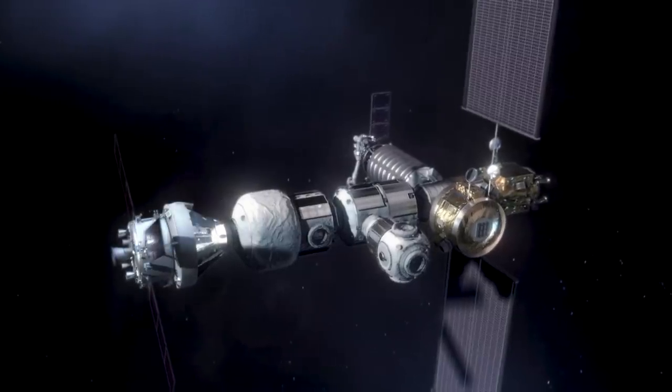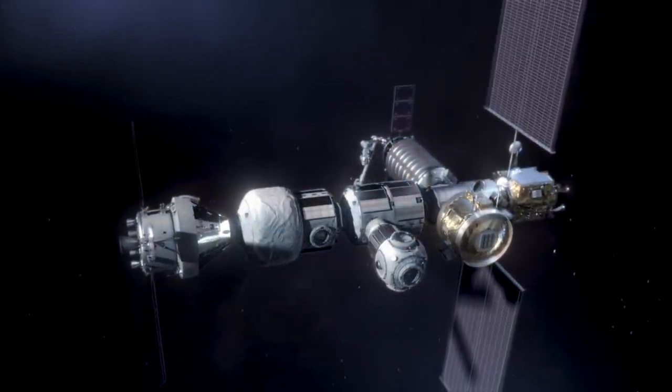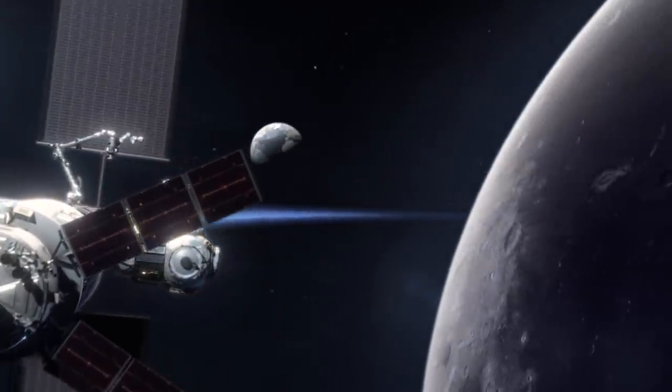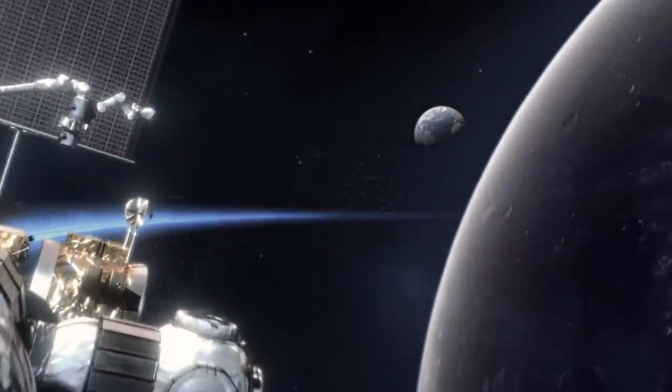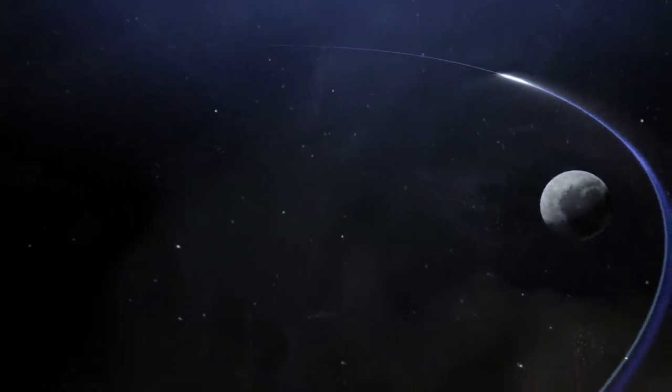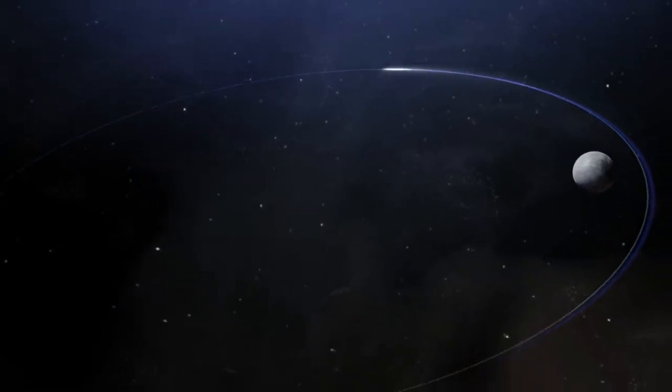This orbit will be home for NASA's Gateway, the future space outpost that will support visiting astronauts on their way to the Moon and beyond. To help prepare for Gateway operations in this orbit, Capstone will fly the path first.